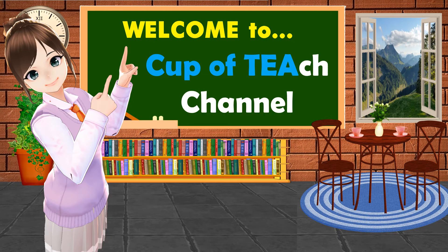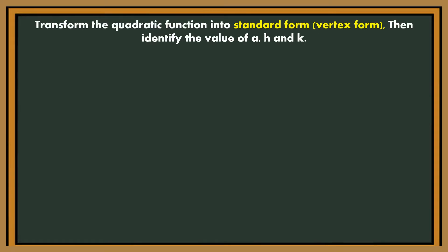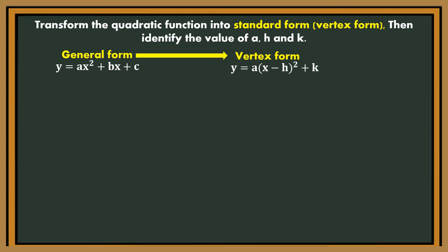Hi guys! Welcome back to Cup of Teach. We're going to discuss transforming quadratic functions from general form to standard form or vertex form, and vice versa. Always remember the general form: y is equal to ax squared plus bx plus c. Transform that into vertex form, which is y is equal to a, quantity x minus h, quantity squared plus k.